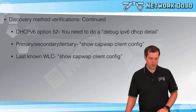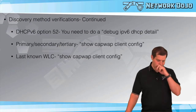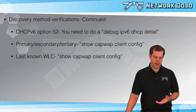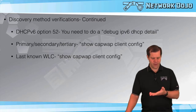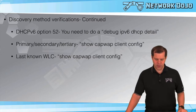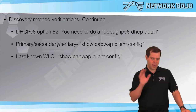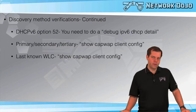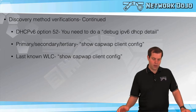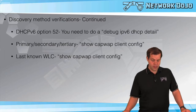If we're doing DHCPv6 option 52, validating that requires a debug. This would have to be configured on the Windows 2012 server, so there should be no expectation of troubleshooting that one.